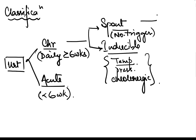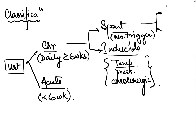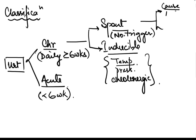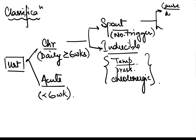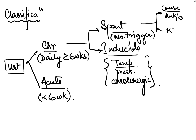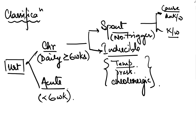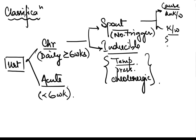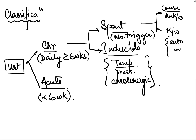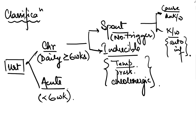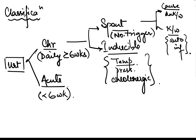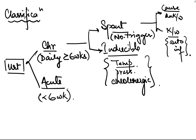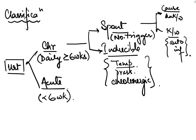Most spontaneous urticaria cases don't have any known cause — that is idiopathic. If the cause is known, it can be due to autoimmune factors or various chronic infections. So urticaria can be acute or chronic, chronic further into spontaneous and inducible, and spontaneous urticaria can be idiopathic or due to autoimmune or infections.